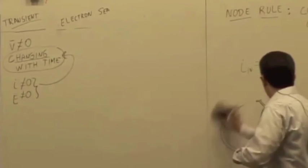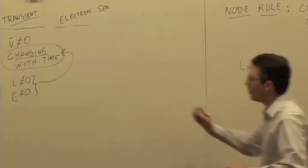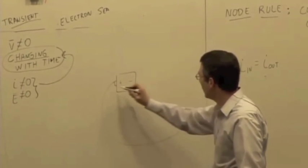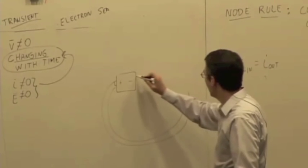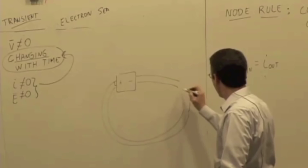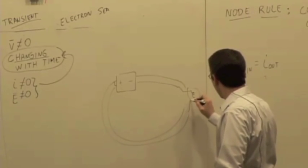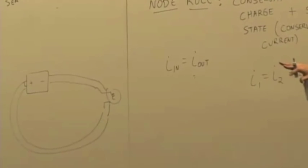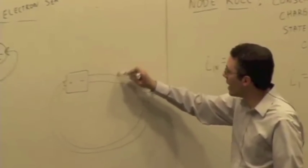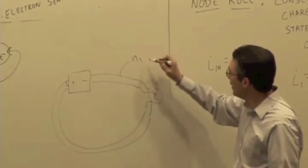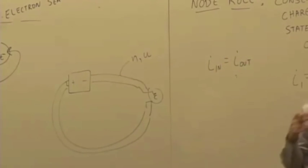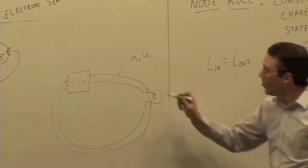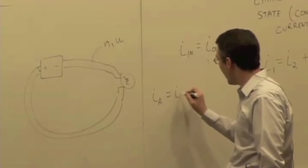Let's draw that circuit again. Here's the battery, here's the light bulb. Let's assume that it's the same type of wire throughout the entire circuit. The wire has some electron density N and some electron mobility U — copper or something, so we can look those up in a table. We can say that the current at A is equal to the current at B.